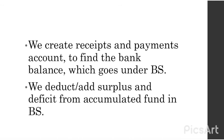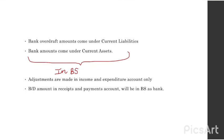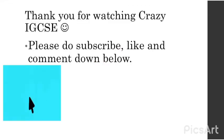We deduct or add the surplus and deficit from the accumulated fund in the balance sheet. Cost value is the amount before depreciation is deducted. Book value is the amount after the depreciation amount is cut from the cost of equipment. Bank overdraft amounts come under current liability and bank amounts come under current assets in the balance sheet. Adjustments are made in the income and expenditure account only, and the brought-down amount in the receipts and payments account will appear in the balance sheet as bank.